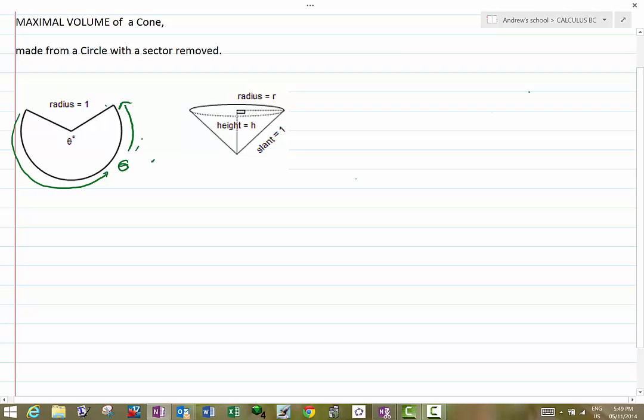Since r is 1, and this arc length becomes the circumference of the base of the cone. So the radius of the cone is going to be such that 2 pi r is equal to theta, or r is theta over 2 pi.